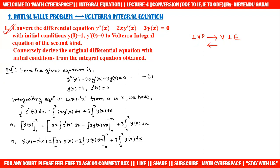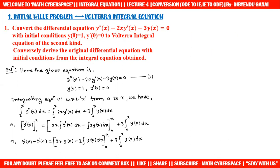We will understand this process using an example. Given: convert the differential equation y''(x) − 2x·y'(x) − 3y(x) = 0, with initial conditions y(0) = 1 and y'(0) = 0, into a Volterra integral equation of the second kind. In the first part, we convert this differential equation into the Volterra integral equation.